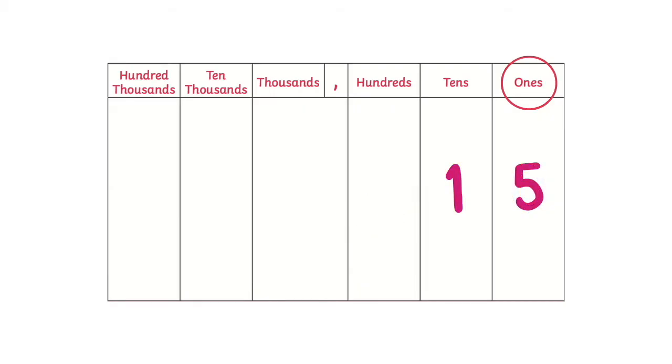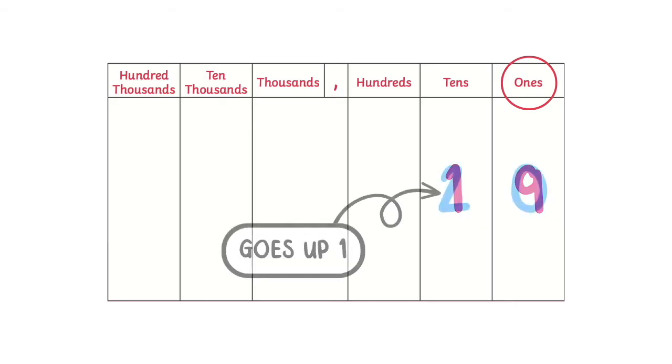If the ones digit is five, six, seven, eight, or nine, then the tens digit goes up by one.